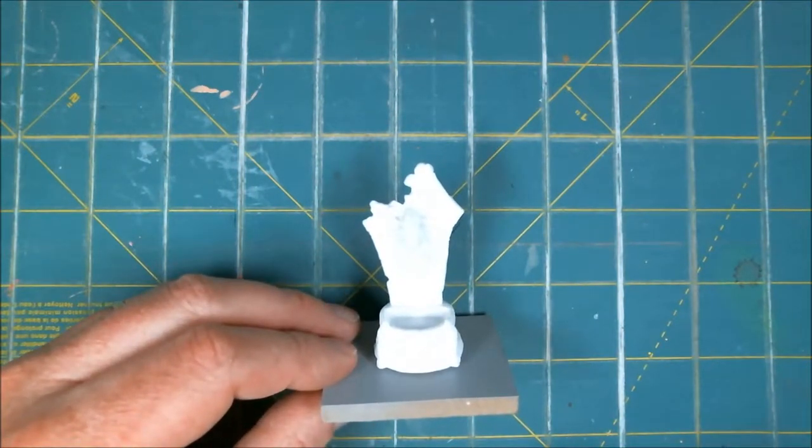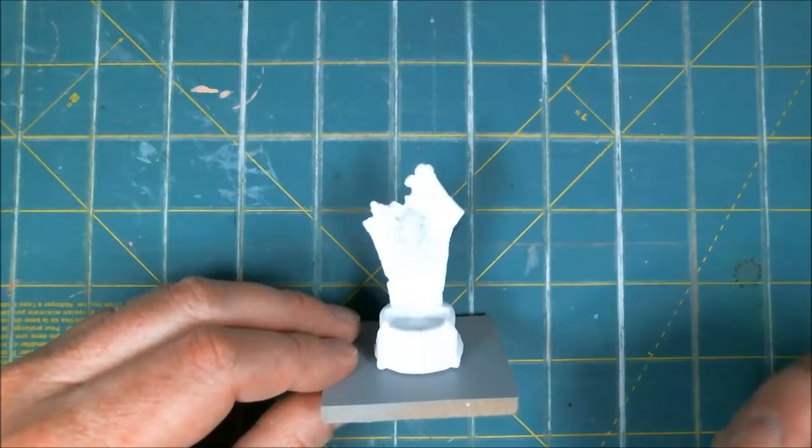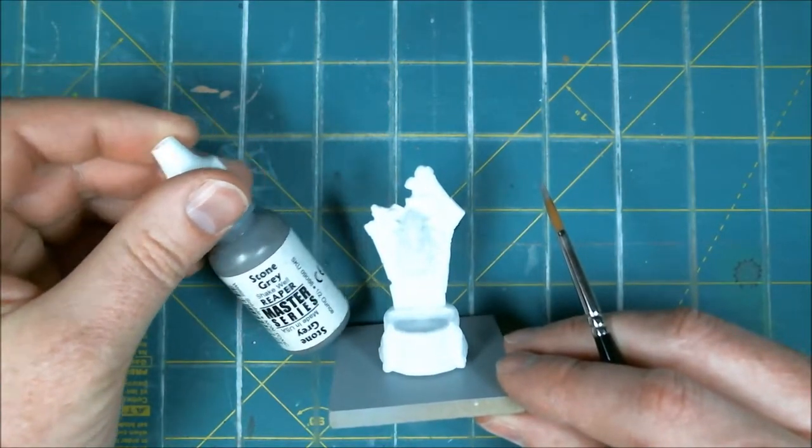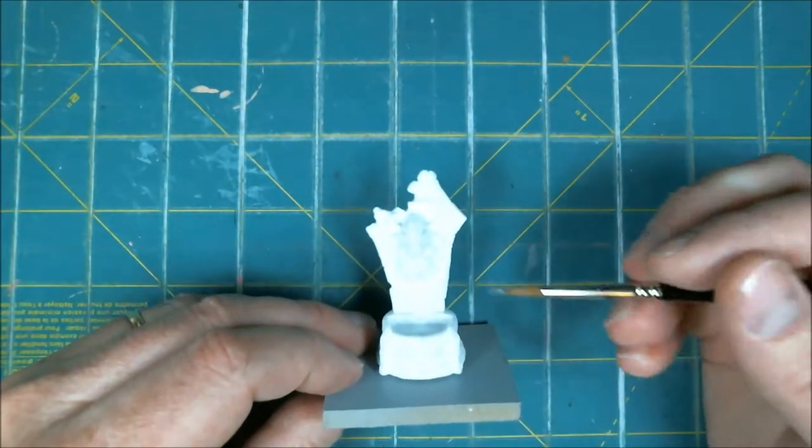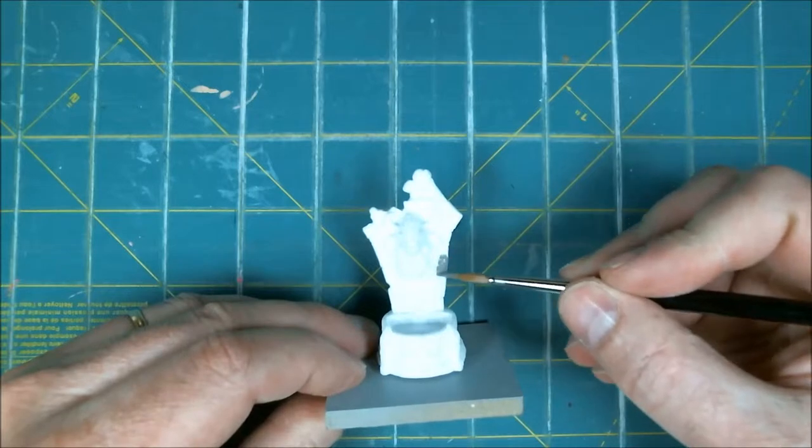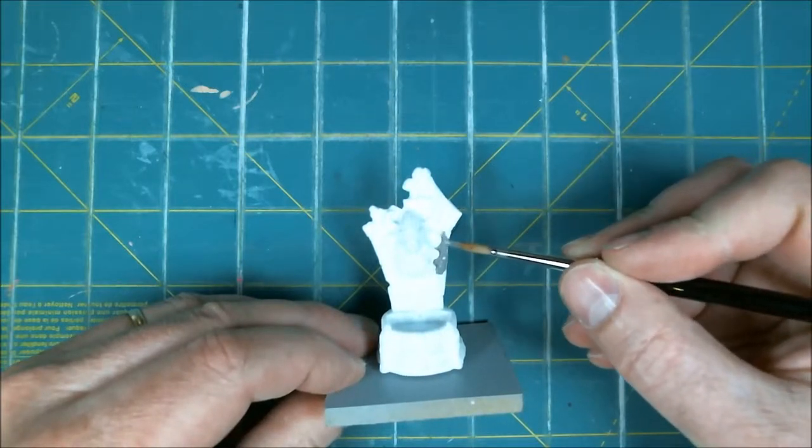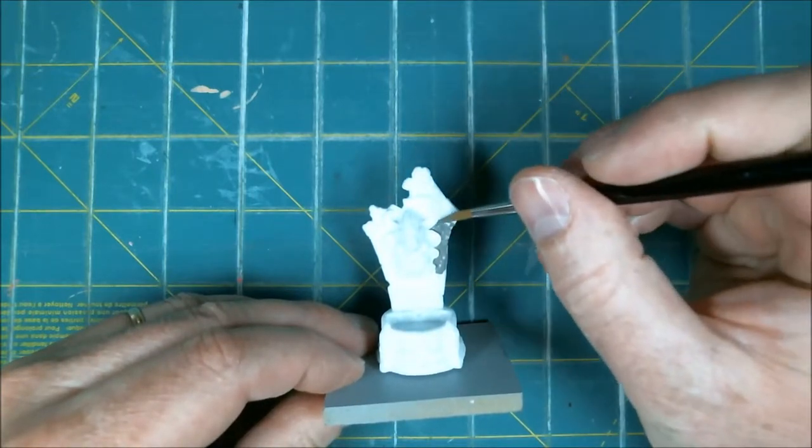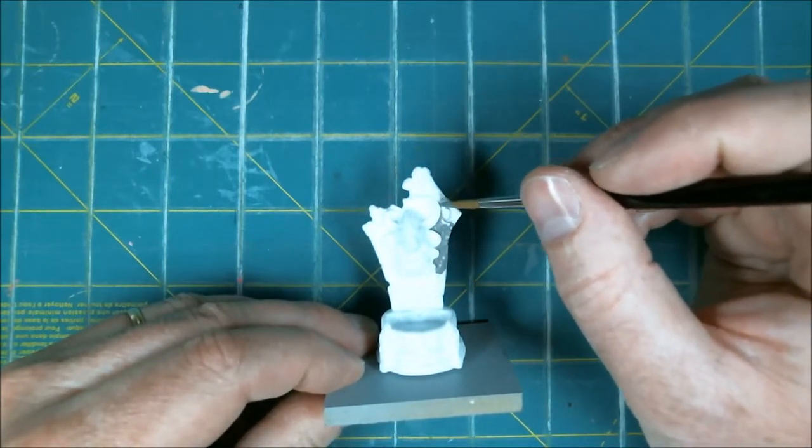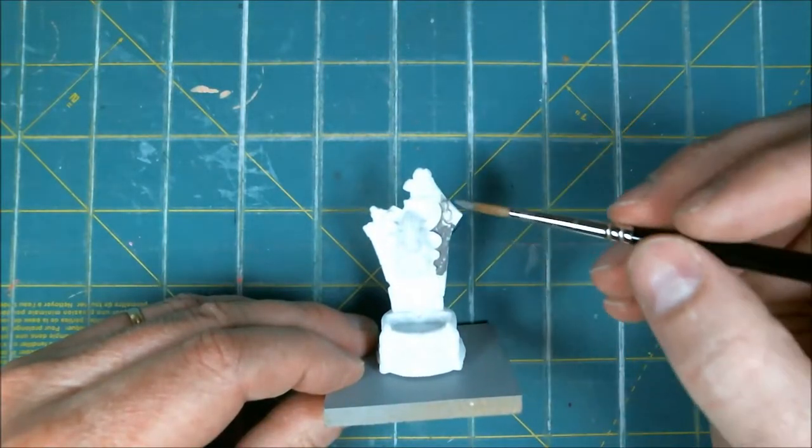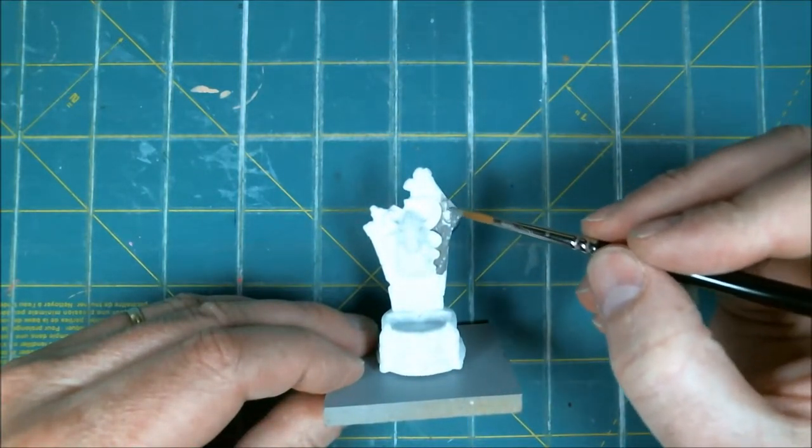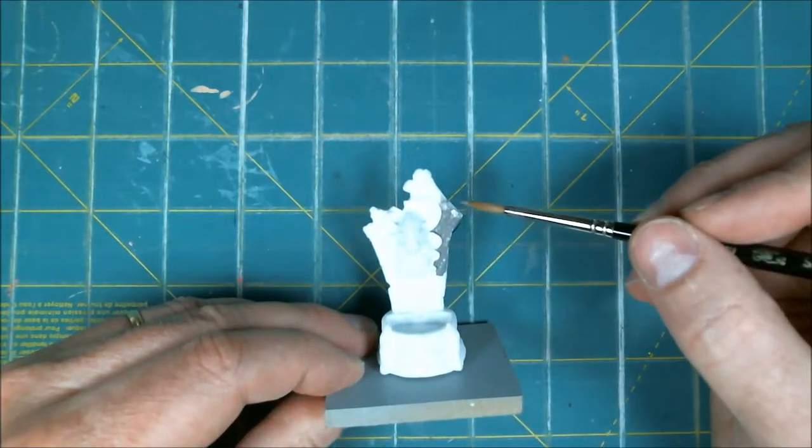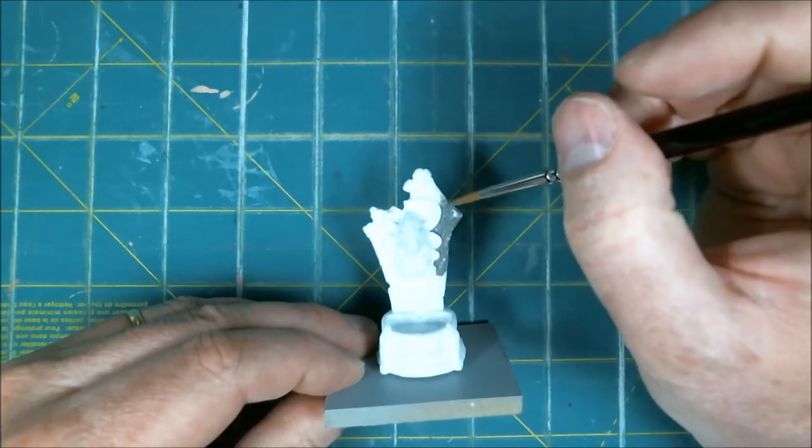I have not primed it because I'm planning to paint almost straight out of the bottle. That's what you're supposed to be able to do with Bones, so I'm going to try it. I've got Stone Gray and I'm pretty much just going to go over all the stone areas. I'm not worried too much about getting it clean. This is going to be one of those where I go back and repaint over things. I also haven't tried to trim any mold lines.